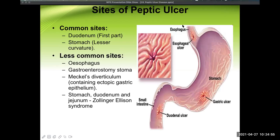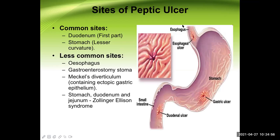The common sites of peptic ulcer are: for duodenal ulcer, the first part of the duodenum; and for gastric ulcer, the lesser curvature of the stomach.